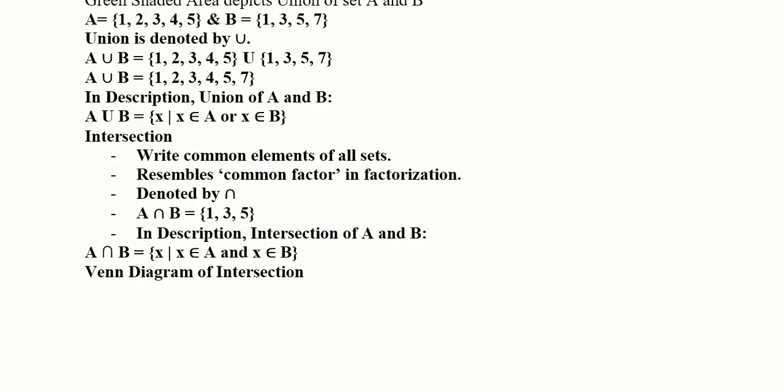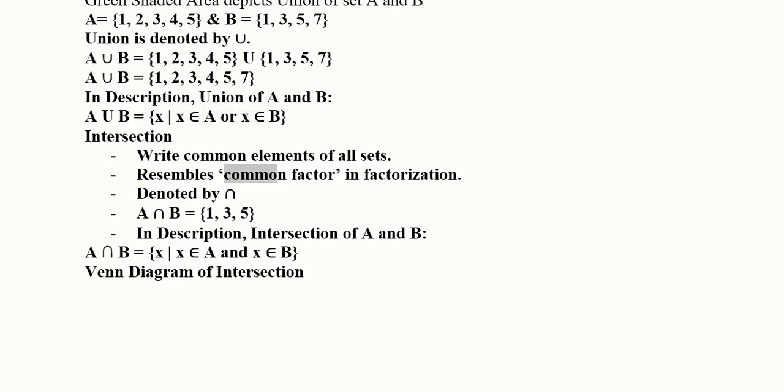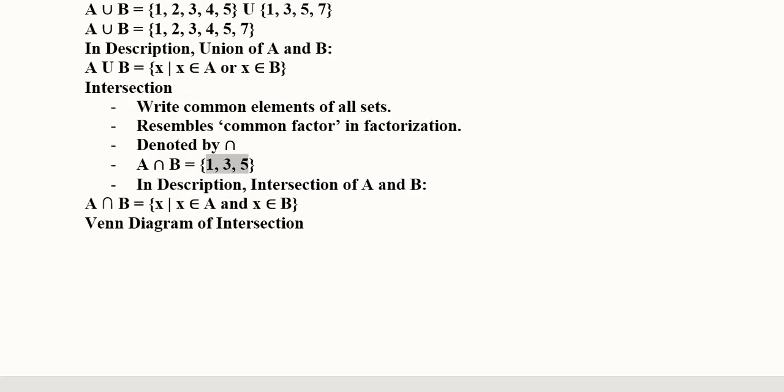Now, we come to the other operation which is intersection and in the intersection what we get is the common factor. We write them, not all of them but only the common factors. It is represented with this inverted U and if we take the intersection of the two, this will be the common members and we can see that these are the common members 1, 3 and 5.